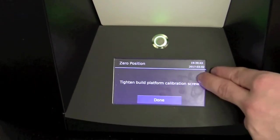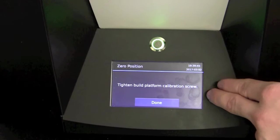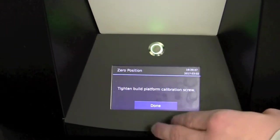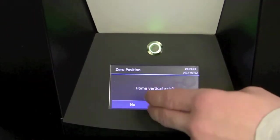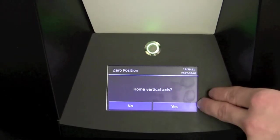It prompts us to tighten the build platform calibration screw, which we have already done in the previous step. So we will select done. And we will home the vertical axis.